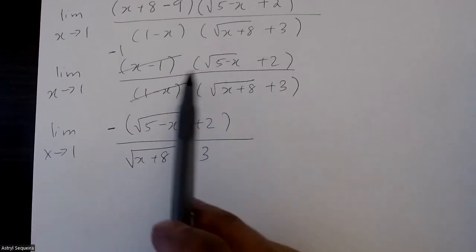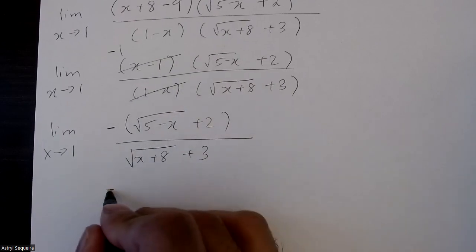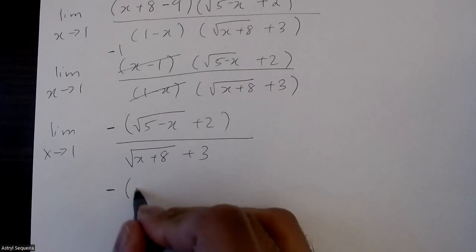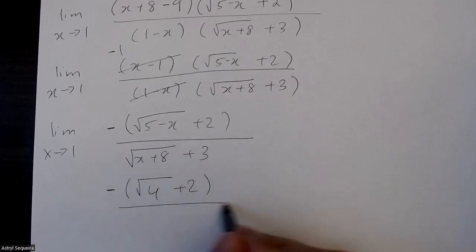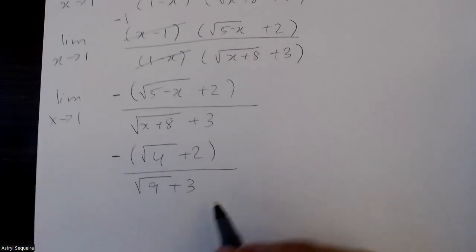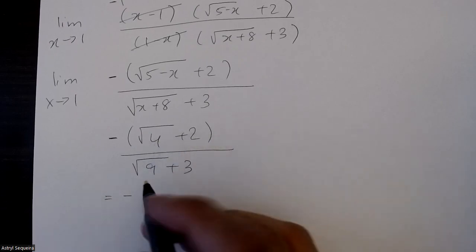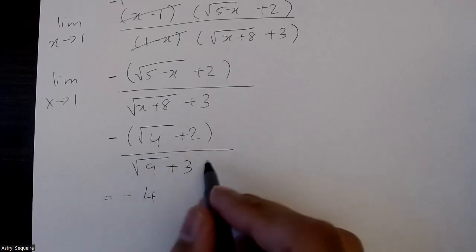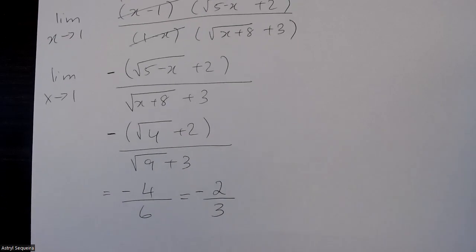Now I can sub in my limit. After your cancellation, you can always sub in your limit. So in this case, I'll get negative root 4 plus 2, root 9 plus 2 over root 9 plus 3, which is just negative. That's going to be 2 plus 2, which is 4. It's going to be 3 plus 3, which is 6. So final answer is just negative 2 over 3.